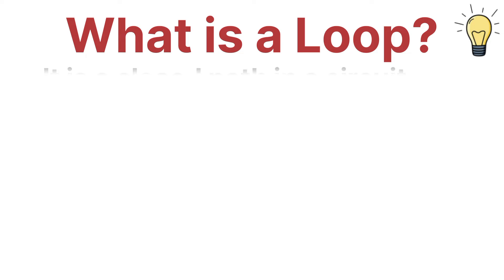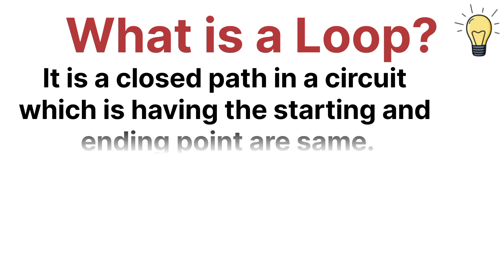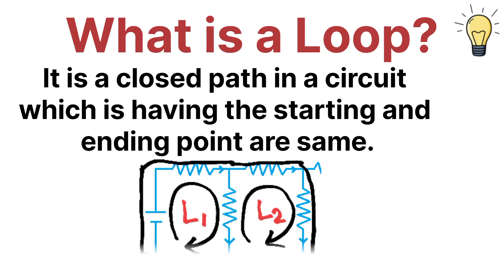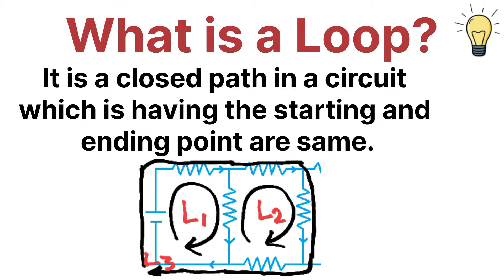A loop is nothing but a closed path in a circuit or in a network. That means a loop is a closed path in a circuit that has the starting and the ending point the same. As you can see in the example, the starting and ending point of a closed path is the same, so that is called a loop. In the given example, you can see that there are three loops available.